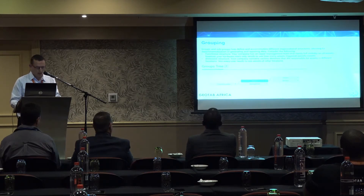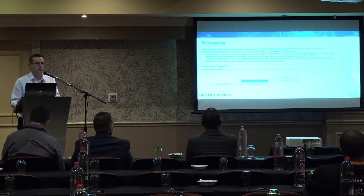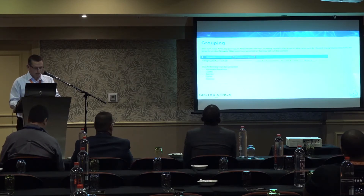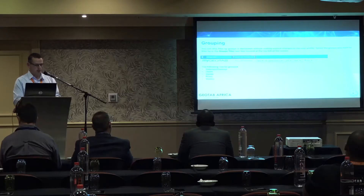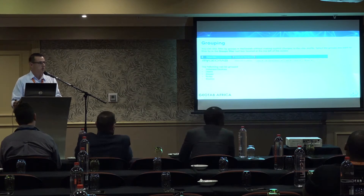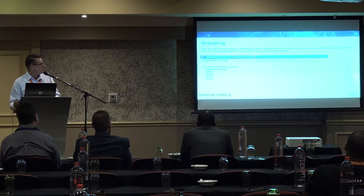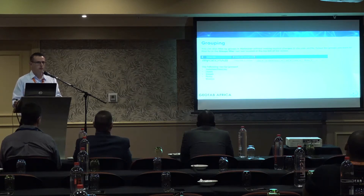A complex group and subgroup structure can be created, and assets can belong to more than one grouping structure. One of the quickest ways to see this group/subgroup structure in action is to use them as a filter. Group filtering is available for numerous sections including vehicles, zones, rules, and users. You can also filter by groups in MyGeotab without making explicit changes to the user profile. There is a group filter in the top left-hand corner that lets you see quickly what belongs to what group within the platform.